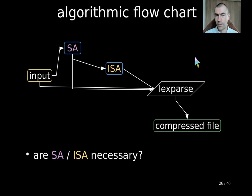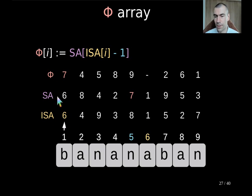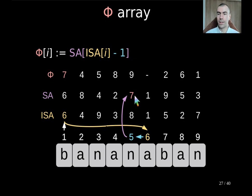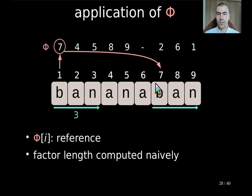The next question is, are both SA and ISA necessary? If we take the phi array, defined exactly as a reference lookup, then we don't need them. What does phi do? For a given query — say we want the reference for position 1 — we would query ISA for where 1 is stored in the suffix array, go to that position minus one, and look up the suffix array value. But that entry is already stored in the phi array at the query position. So basically, we can just use phi for references and compute the factor lengths naively. We can look up the 7 and compute naively that the length is 3.